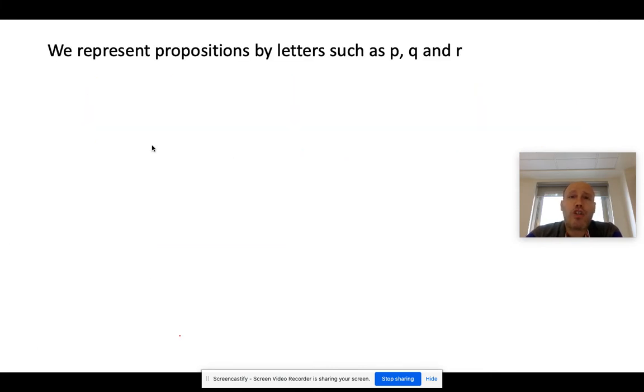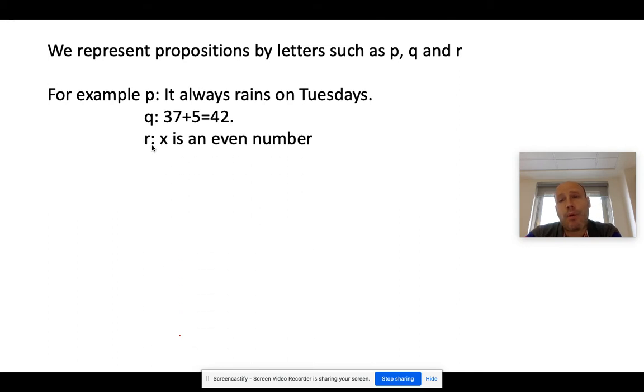We represent propositions by letters such as P, Q, and R. For example, P: it always rains on Tuesdays. Q: 37 plus 5 equals 42. R: X is an even number.